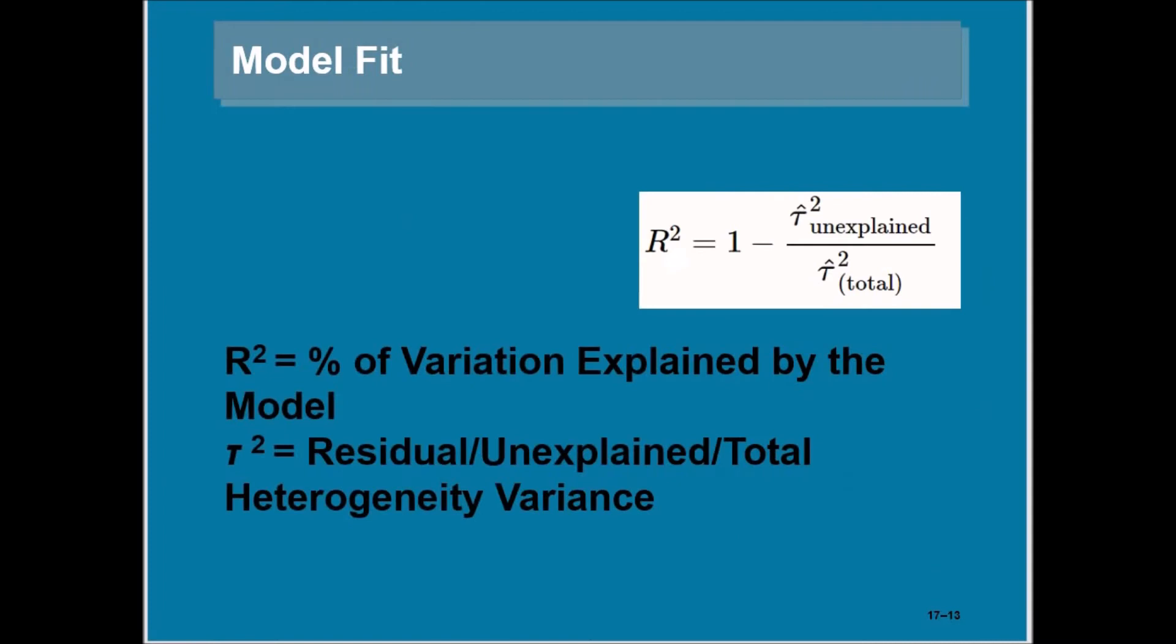How will you calculate the model fit? Just like you use R-square in traditional OLS regression, but in meta-regression analysis the R-square is not exactly similar to the R-square used in OLS regression modeling. Here, R-square equals 1 minus tau-square unexplained divided by tau-square total. R-square is the percentage of variation explained by the model. Tau-square equals residual unexplained over total heterogeneity covariance.